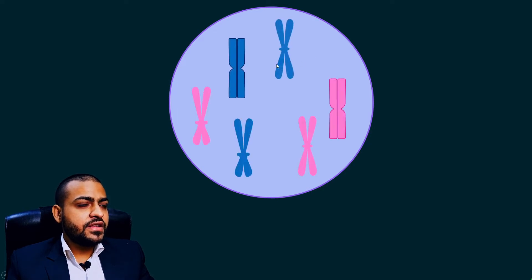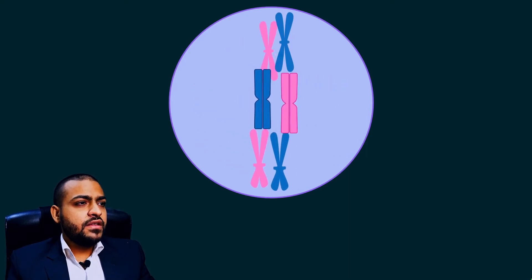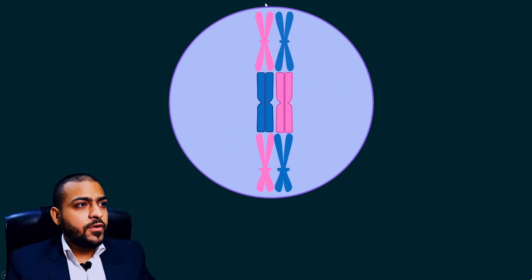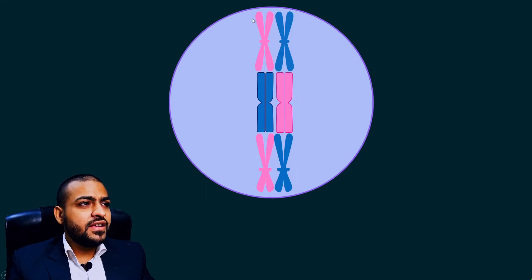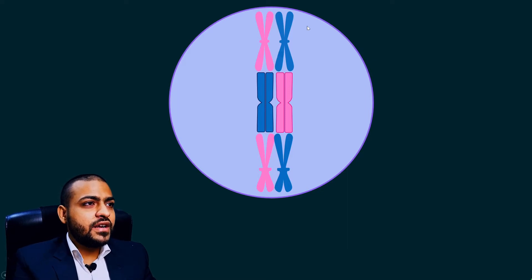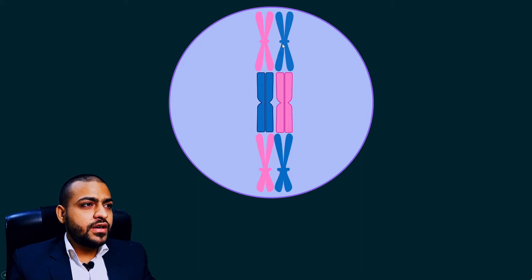Let's suppose this is a somatic cell. You know a somatic cell consists of 46 chromosomes in humans, and these 46 chromosomes are in the form of pairs — we have 23 pairs of chromosomes. Each pair consists of two chromosomes: one chromosome from the maternal side and the other from the paternal side. So we have 23 multiplied by 2 — two sets of 23 chromosomes.